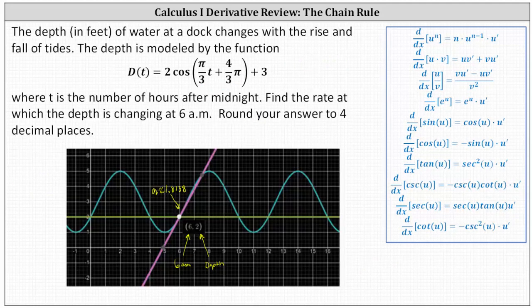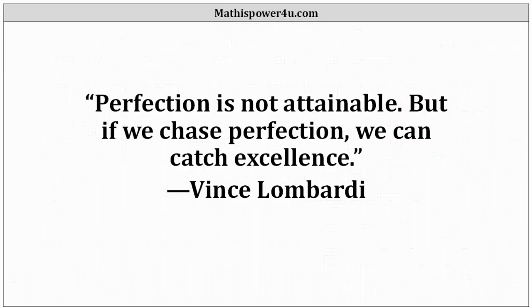Before we go, let's take a look at this graphically. For 6 a.m. we're considering the point six comma two, where the six indicates six hours after midnight, and the function value d of six is two, which indicates the depth of the water at 6 a.m. is two feet. We found the slope of the tangent line at the point six comma two to be approximately 1.8138, indicating the water is rising at a rate of 1.8138 feet per hour at 6 a.m.